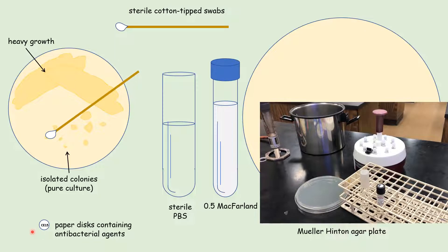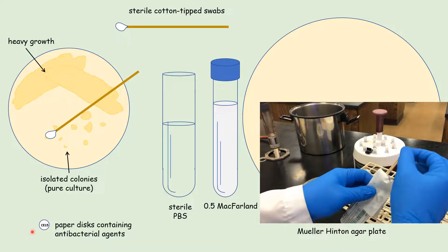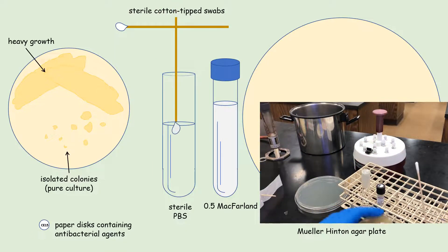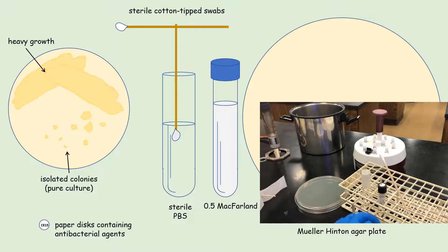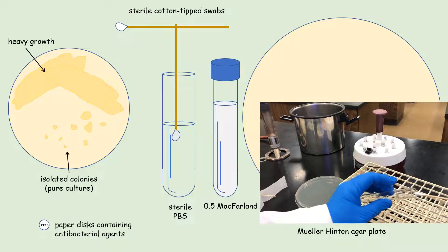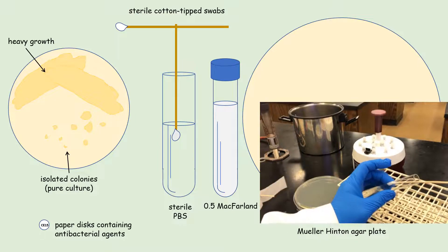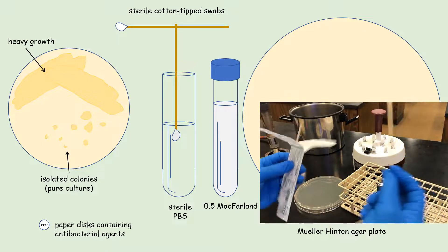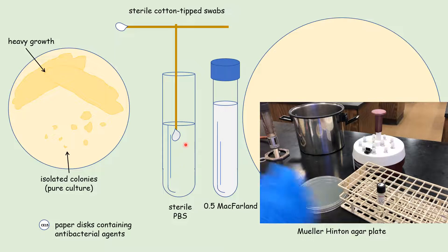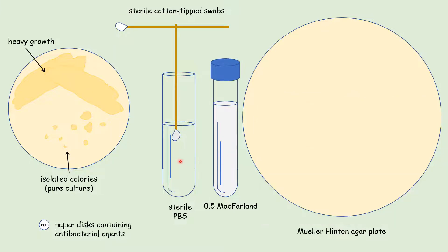We start by taking one of our sterile cotton tip swabs and picking up a few isolated colonies — one or two, depending on their size — and suspending them inside our sterile tube of phosphate buffered saline. We want to be careful not to suspend too much bacteria. We compare the cloudiness, or turbidity, of the bacterial suspension in the PBS tube with that of the 0.5 McFarland tube. We want to match them so that we have roughly 1.5 times 10 to the eighth bacterial cells per mL.